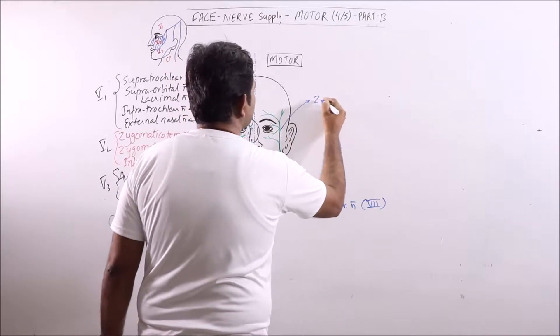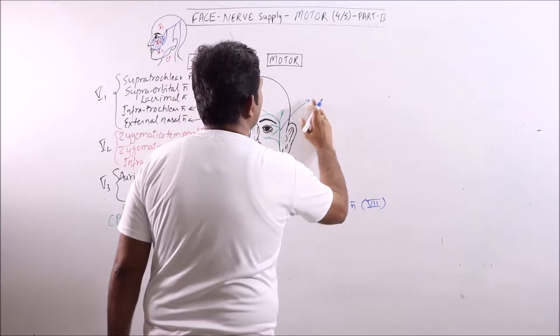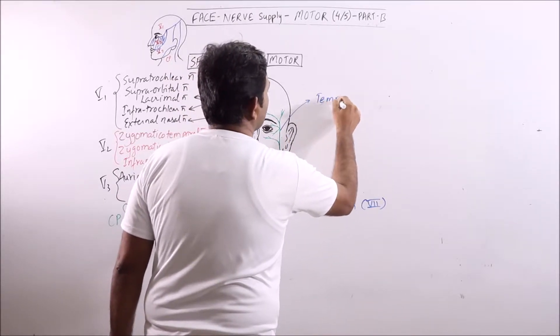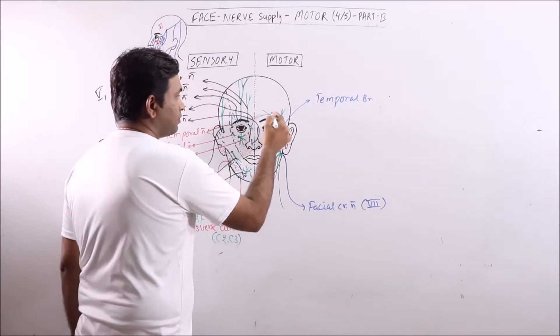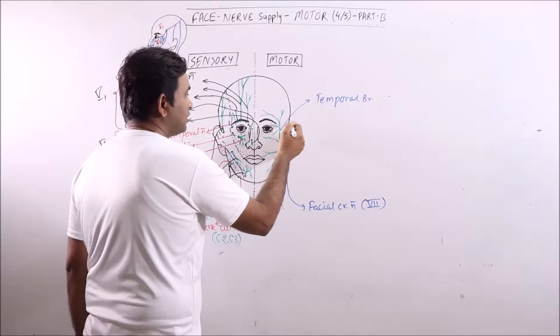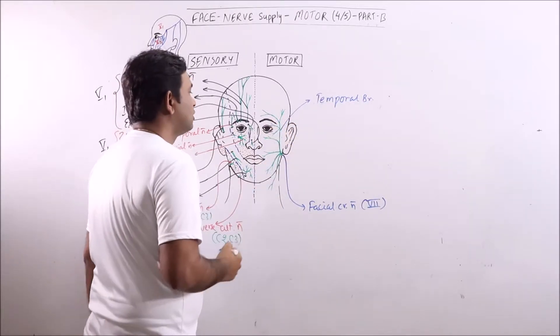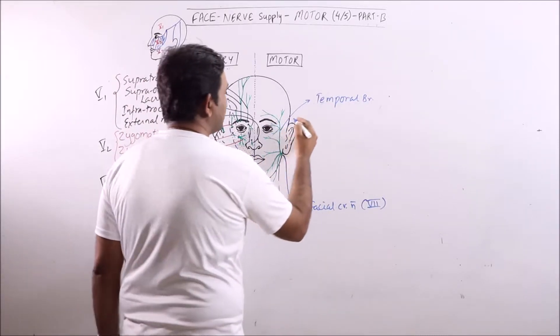This one is temporal branch. Temporal branch supplies the frontalis muscle, auricular muscles, and the orbicularis oculi muscle.